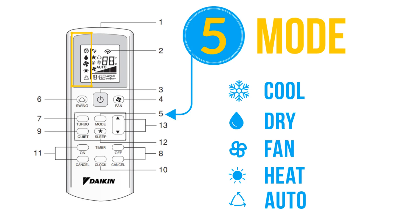Use dry mode when there is no need for heating or cooling but there is high humidity during the rainy season. The raindrop symbol will display on the screen, and dry mode works as a dehumidifier. Use heat mode in winters for heating the room — this is available with heat pump units only, and the sun symbol will be displayed. Fan mode can be used to use Daikin AC as a fan without heating or cooling, and the fan symbol will be displayed on the screen.